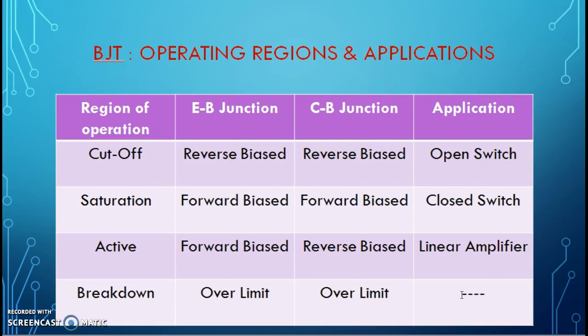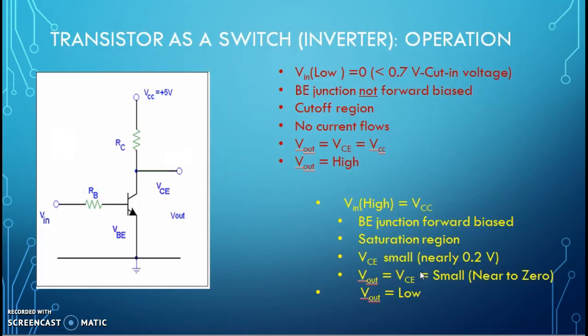So, we are not going to operate it in breakdown region. Now, we will see how this transistor works as a switch or inverter. In this, we are using common emitter configuration. Emitter is grounded. Base is connected to the input terminal through the current limiting resistor RV. Collector is connected to the VCC through the current limiting resistor RC. Output is taken from the collector terminal.